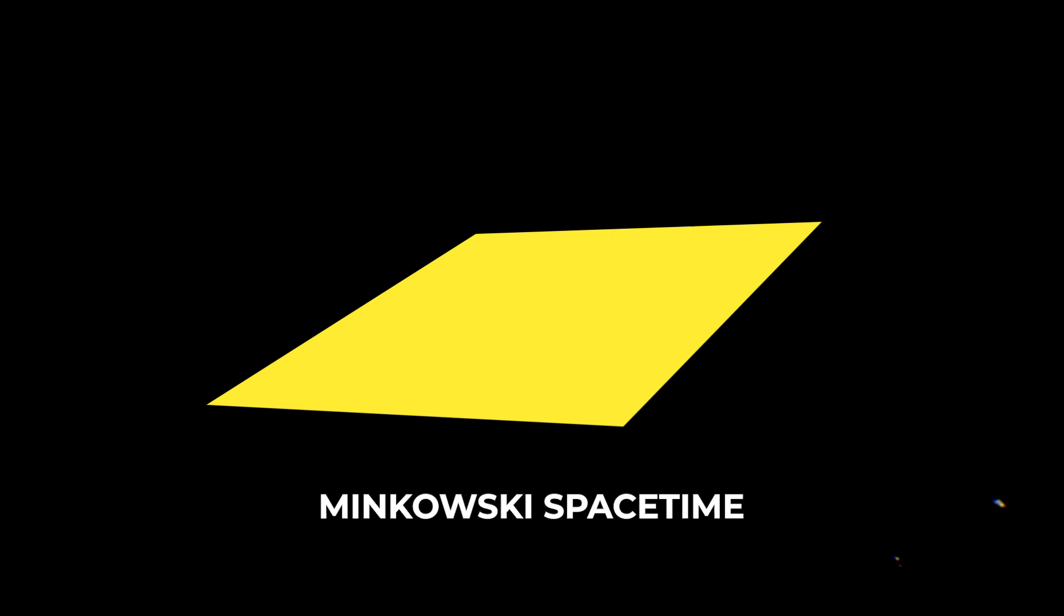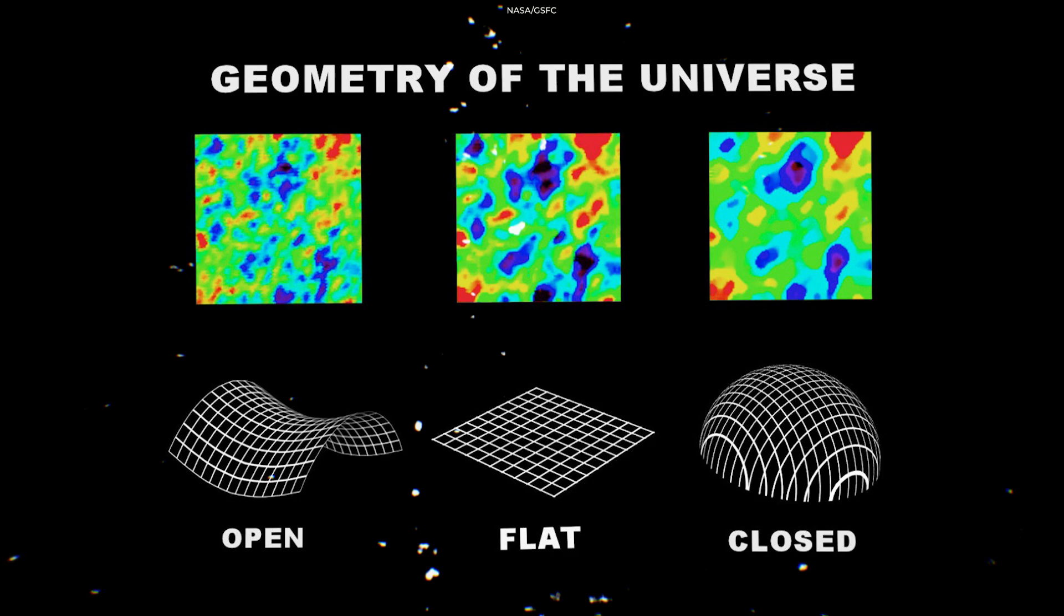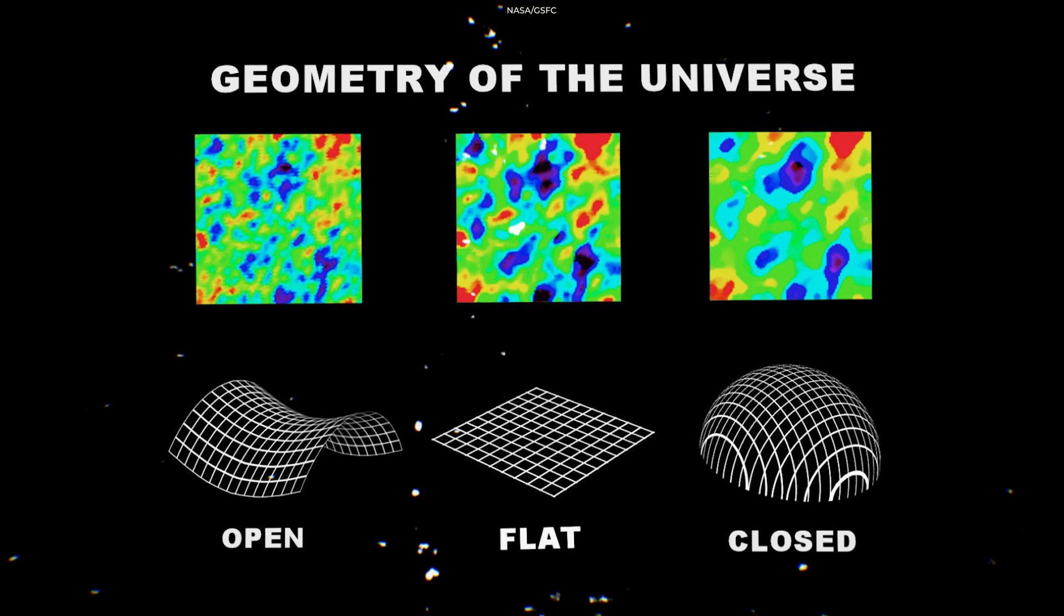One of the key features of Minkowski space is that it is a flat space, meaning that it has no curvature. This is in contrast to other types of space, such as the curved space of general relativity, which is described by Einstein's theory of general relativity.